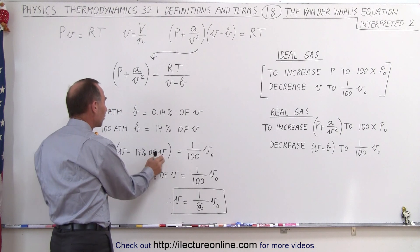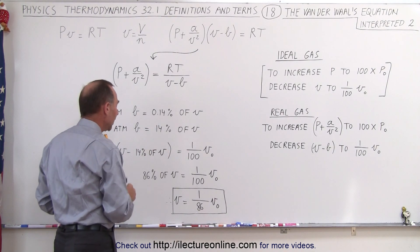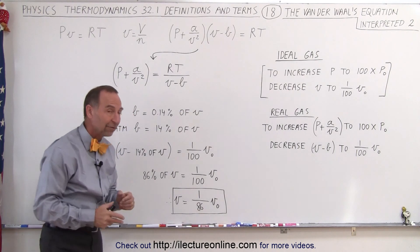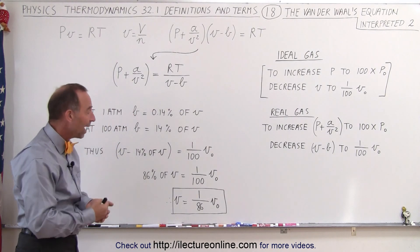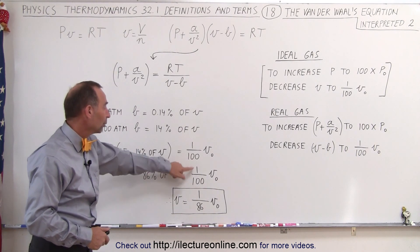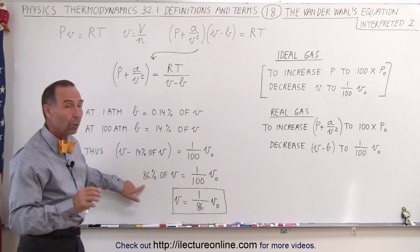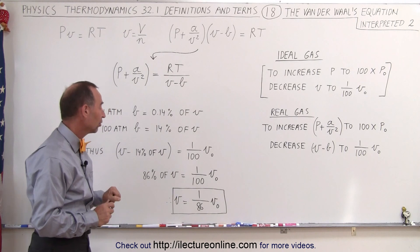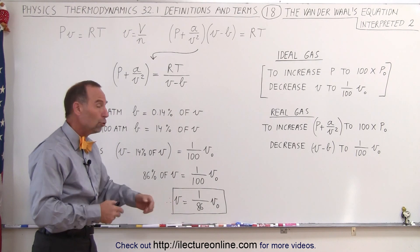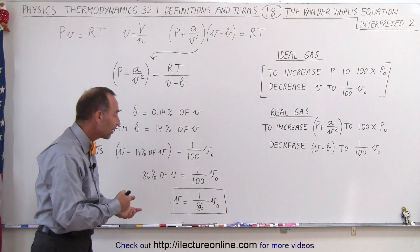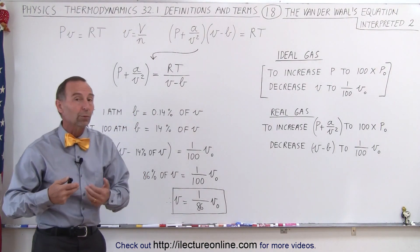In other words, b accounts for 14% of the total change in the volume. That means we only need to change the volume by 86% instead of 100 times the original volume. So instead of v being 1/100 v initial, only 86% of v has to equal 1/100 times v initial, which means that v, the new volume, only has to be reduced to 1/86th the original volume instead of 1/100.